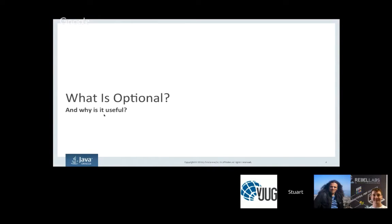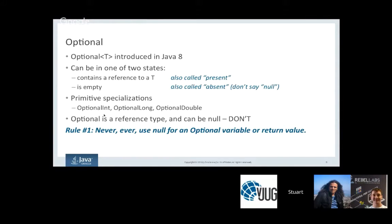What is Optional and why is it useful? Optional is a small family of classes. The reference type Optional<T> was introduced in Java 8, and it has only two states: it can contain a reference to an object of type T, or it can be empty. If it does contain a reference, we say the value is present. If the Optional is empty, the value is absent. I would caution you not to say that the Optional is null, because that's very confusing and, strictly speaking, inaccurate.